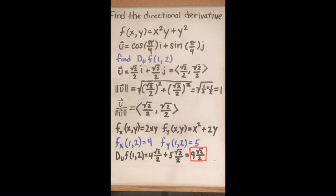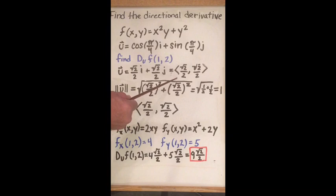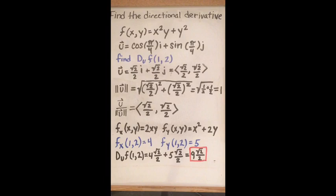The equation for the directional derivative at the point (1, 2): we put in the f partial with x value (4) times √2/2, and the same with y, which turns out to be 5 times √2/2. Adding 4√2/2 plus 5√2/2 gives 9√2/2. And that's the answer.